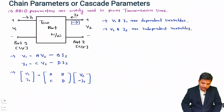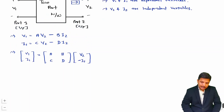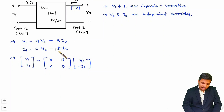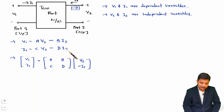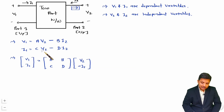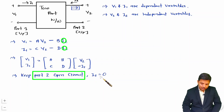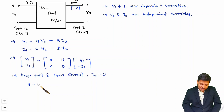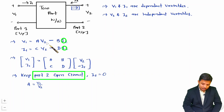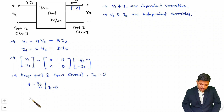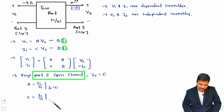Now let me explain how we can measure ABCD parameters. To measure A and C, we set I2 = 0 by keeping port 2 open circuit. With port 2 open, A = V1/V2 (with I2 = 0) and C = I1/V2 (with I2 = 0).